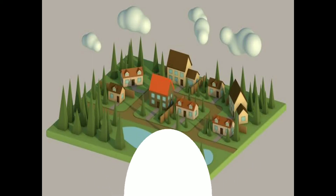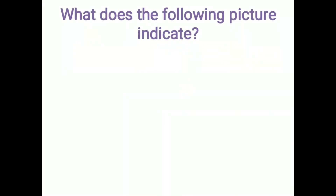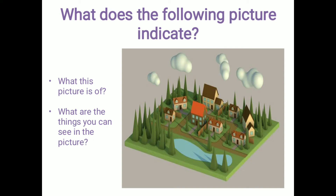Before starting the chapter on urbanization, we will do some activity. What does the following picture indicate? Correct, this is the picture of a village. Now what are the things you can see in the picture? First and foremost you will say small houses and trees, scattered houses, very far, little far from each other, with good open surrounding area.